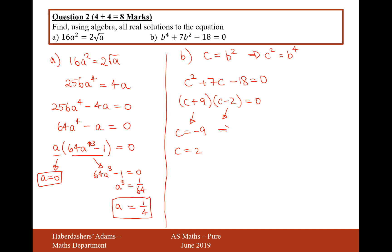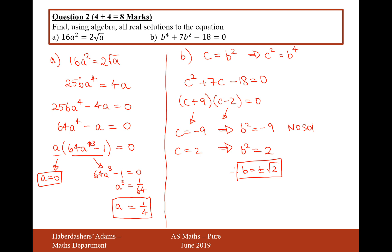Now let's bring b back in. If C was equal to minus 9, then b squared equals minus 9, in which case we get no real solutions. Or b squared equals 2, in which case b is going to equal plus or minus root 2. Those are the only two solutions for this equation. And there we are — that's the answer for question 2.